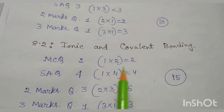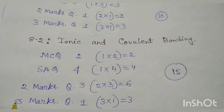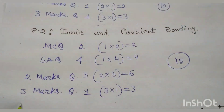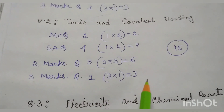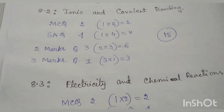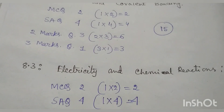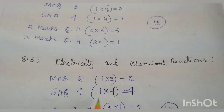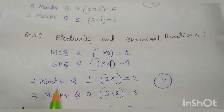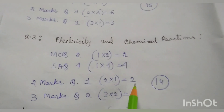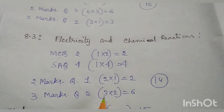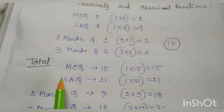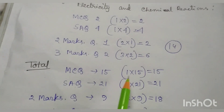Now from Chemistry — 2 marks question: 2 attempts, 2×2 = 4 marks; 1 attempt, 2×1 = 2 marks; 3 marks question: 2 attempts, 3×2 = 6 marks. Total 14 marks from Chemistry. So total MCQ: 15 questions, 1×15 = 15 marks.